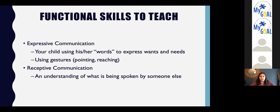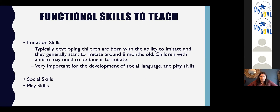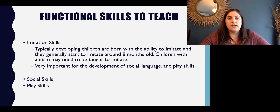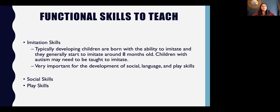The functional skills we can teach fall under a variety of different topics. One is expressive communication — that's how your child uses their words or tries to express something to you, whether with pictures, an AAC device, vocally, or using gestures, pointing, and reaching. We also want to work on receptive communication — what do they understand that we are saying? And imitation skills: imitation is the main way that typically developing children learn from others. Once they learn how to imitate, it's a great skill for learning other things.